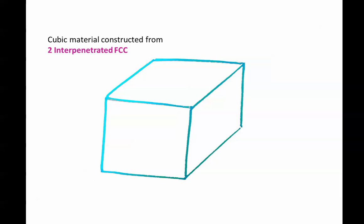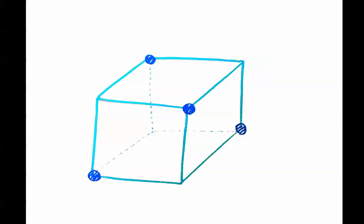Silicon is a cubic material constructed from two interpenetrating face-centered cubic lattices having identical atoms at the corner of a cube. Considering the cubic lattice,